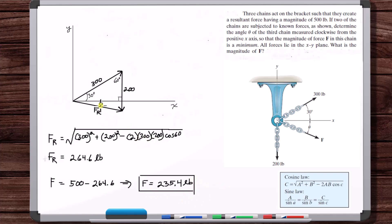But we still need theta, but that's not a problem. We can just use the law of sines to get this angle here, which we'll call alpha. And then theta is just alpha minus 30.